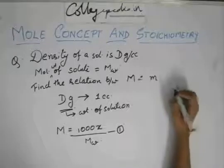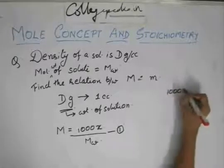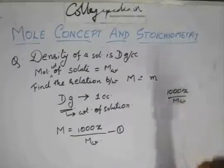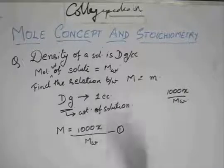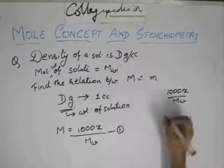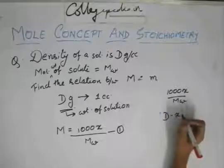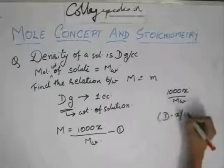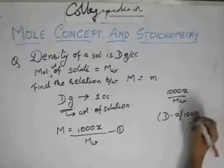So the number of moles of solute is 1000x by mw in 1 litre of solution. And in 1 litre of solution, how many kg of solvent are there? D minus x is the weight of the solvent in grams. So to convert it to kg, you need to divide it by 1000.